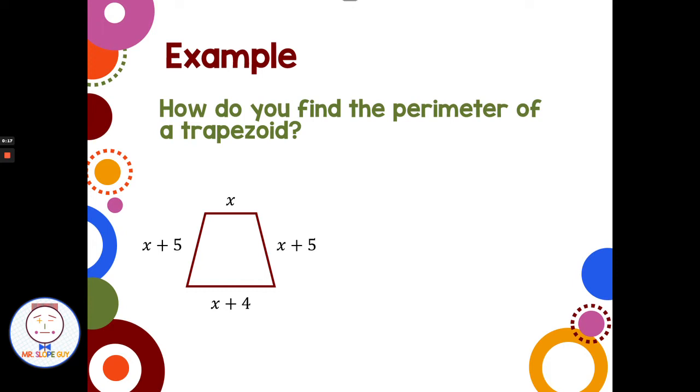Our first problem: how do you find the perimeter of a trapezoid? I see my four sides on a trapezoid. There is a formula for area, but for perimeter, we just need to add up all the sides.